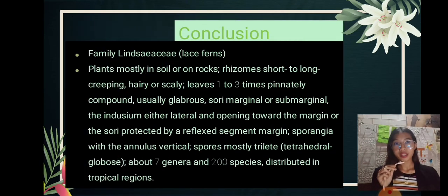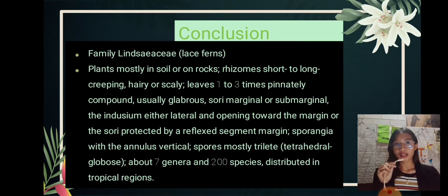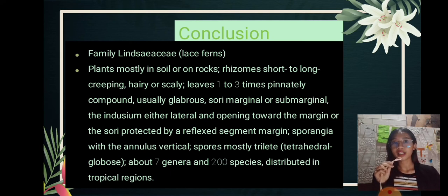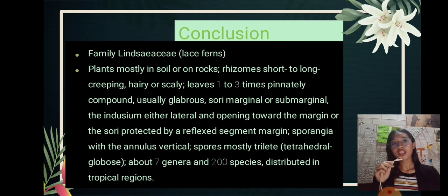In conclusion, the family Linsaeaceae, or lace ferns, are plants mostly in soil or on rocks. Rhizomes are short to long and creeping, hairy or scaly. The leaves are 1 to 3 times pinnately compound, usually glabrous. The sori are marginal or sub-marginal. The indusium is either lateral and opening toward the margin, or the sori are protected by a reflexed segment margin. Sporangia with the annulus vertical, spores mostly trilete, tetrahedral, globose. About 7 genera and 200 species distributed in tropical regions.